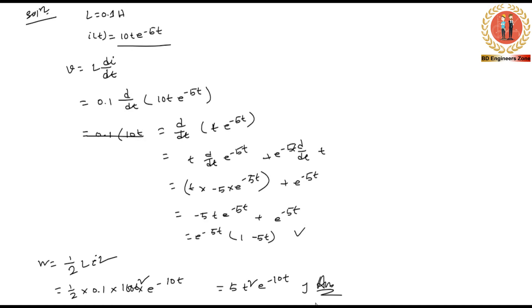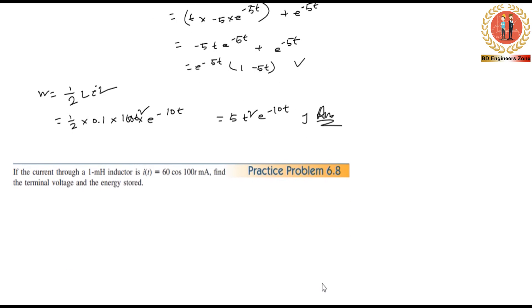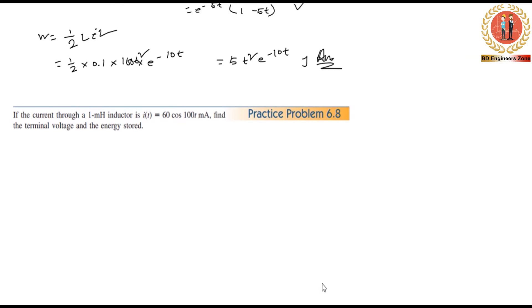Now we are going to look at the practice problem 6.8. The inductor is 1 mH, which is 1×10^(-3) H. The current i(t) is given.